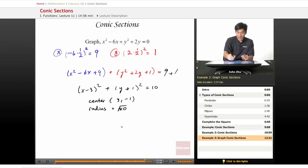So now we can graph this function with the center at 3, negative 1, and a circle with a radius of square root of 10, which equals about 3.2.